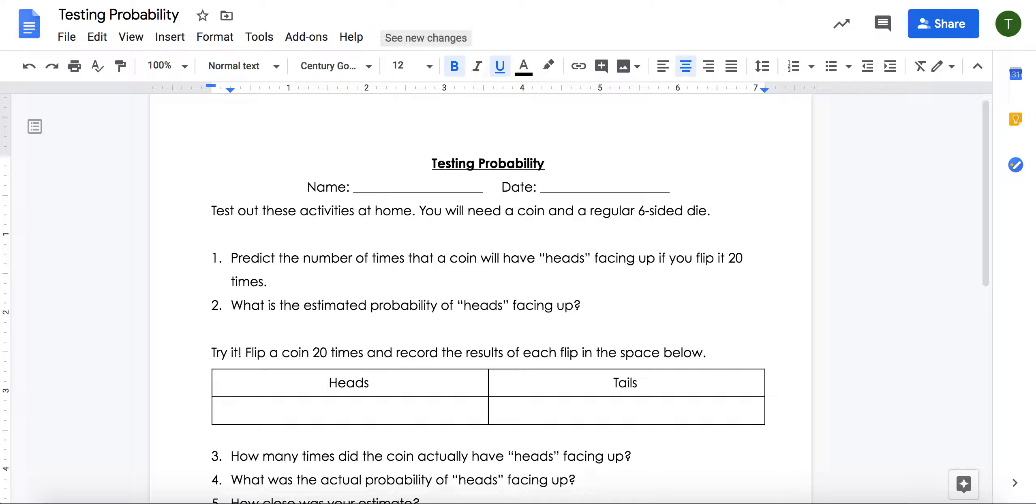For your first experiment, you will need to predict the number of times that a coin will have heads facing up if you flip it 20 times. So remember, heads is the side of a coin that has a head on it or a face on it.